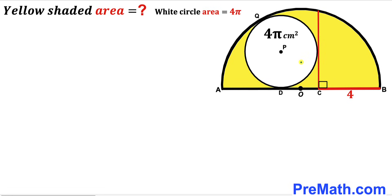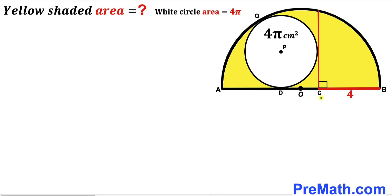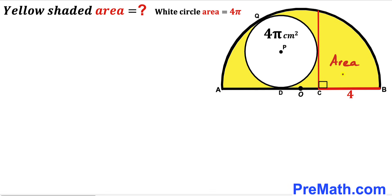Welcome to pre-math. In this video we have a white circle with center P fully confined between a semicircle with center O and a perpendicular, as shown in the diagram. The area of the white circle is 4π cm², segment BC is 4 cm, and AB is the diameter of the semicircle. Our task is to calculate the area of the yellow shaded region.